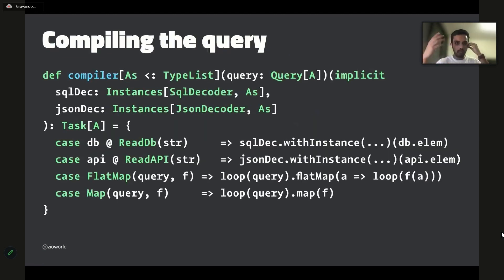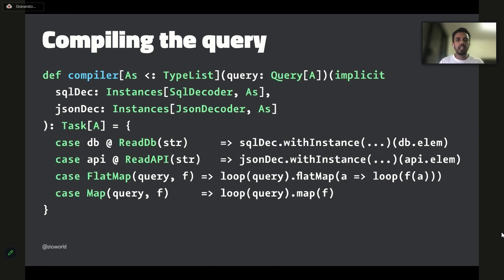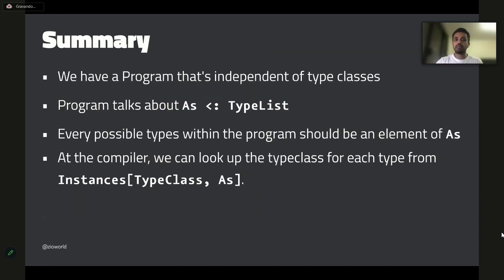Here is an executor — we call it a compiler. I have `Instances[SqlDecoder, As]` and `Instances[JsonDecoder, As]`. At various points in the program I can safely look up those type classes and use them. I can also use the same DSL to form an execution plan — to see the entire thing — making things highly observable. This is what ZIO Constraint List provides.